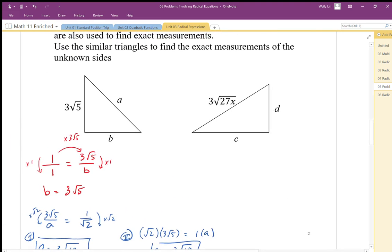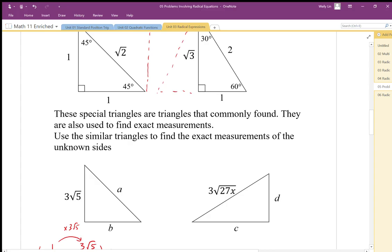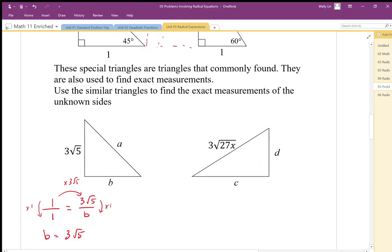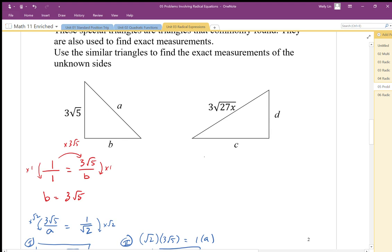For C and D, we can do the same thing. I'm going to use a trig ratio for C. So I'm going to look at my triangle here. I know I'm going to use root 3 and 2. So I'm going to say that root 3 to 2 is equal to side C to 3 root 27x.